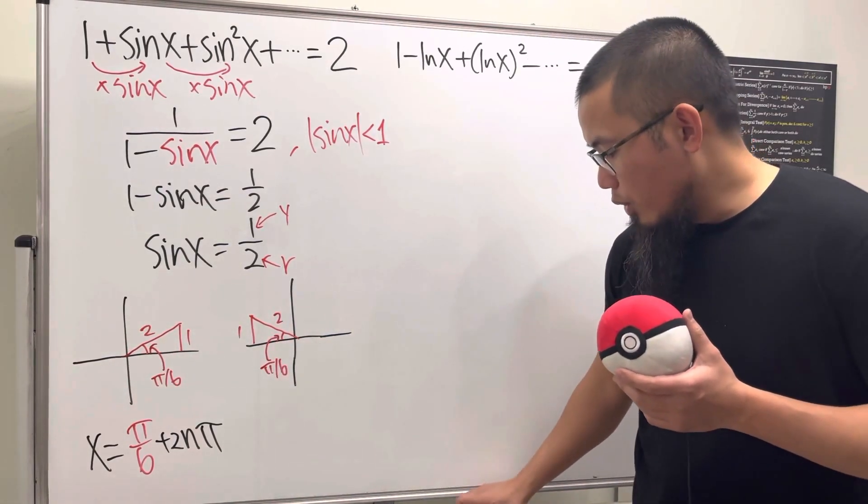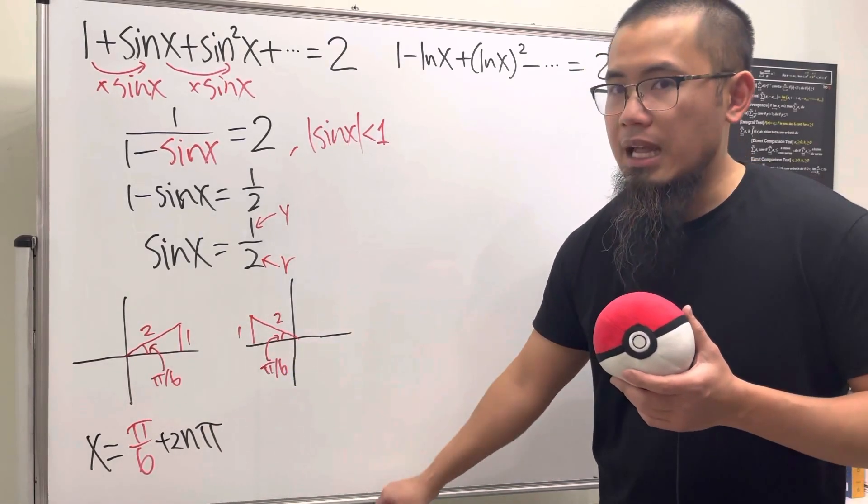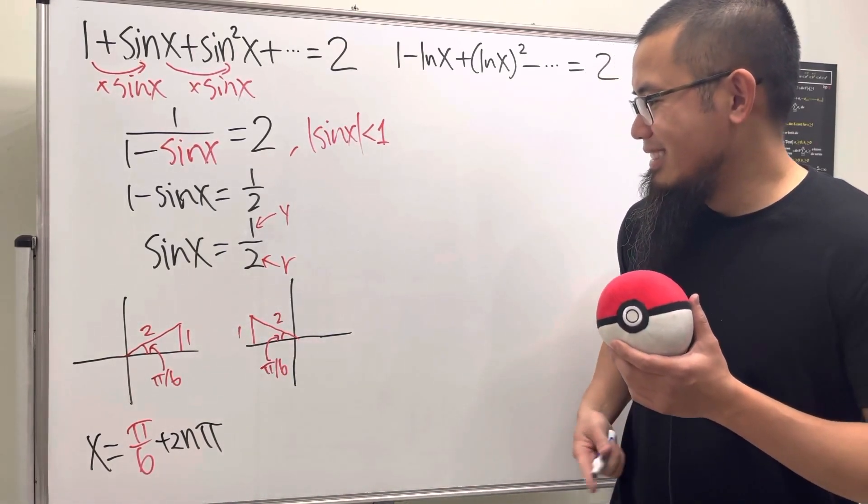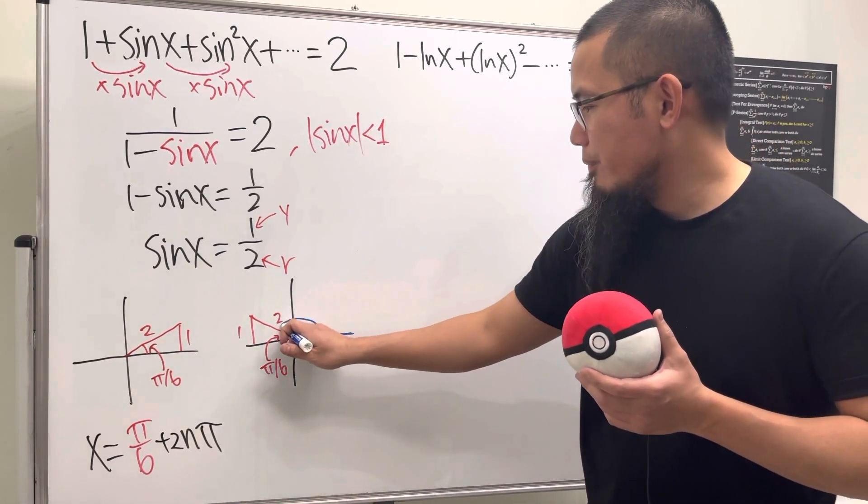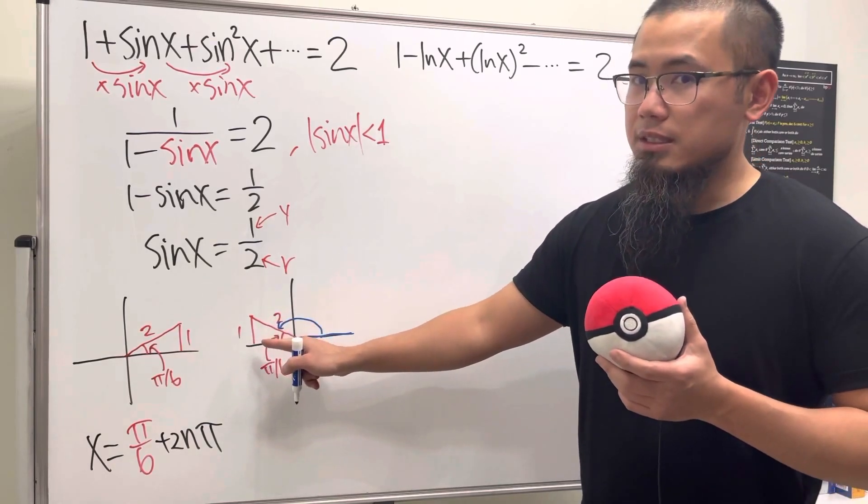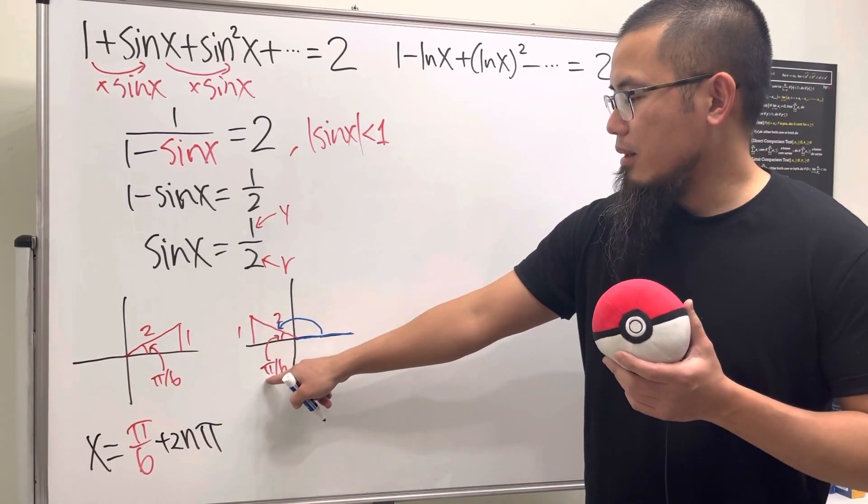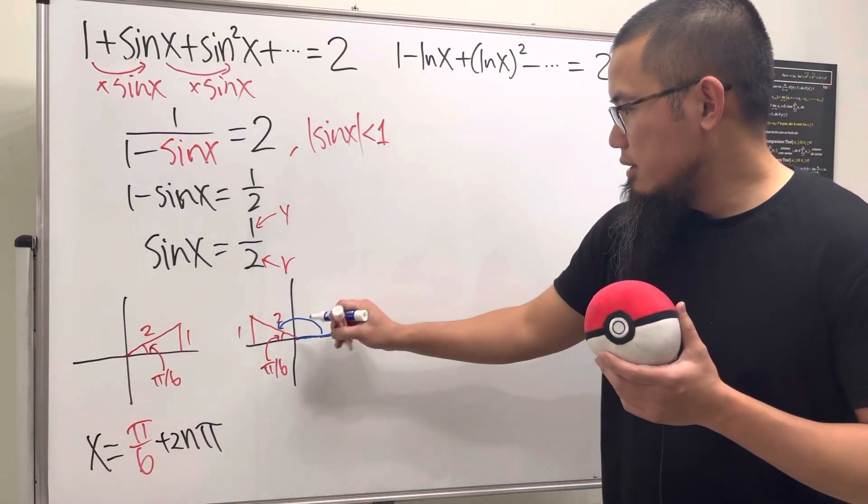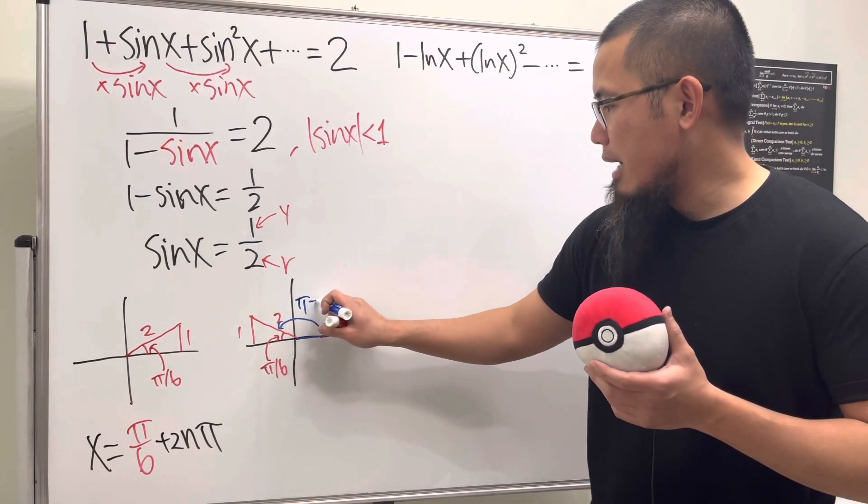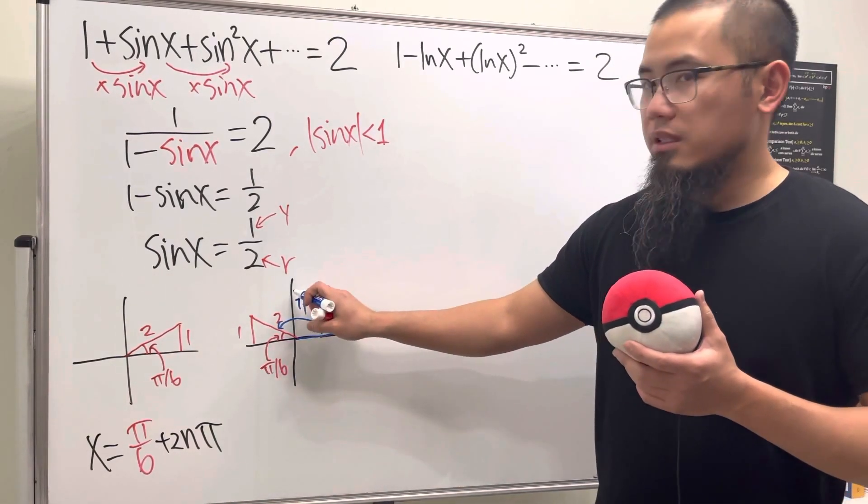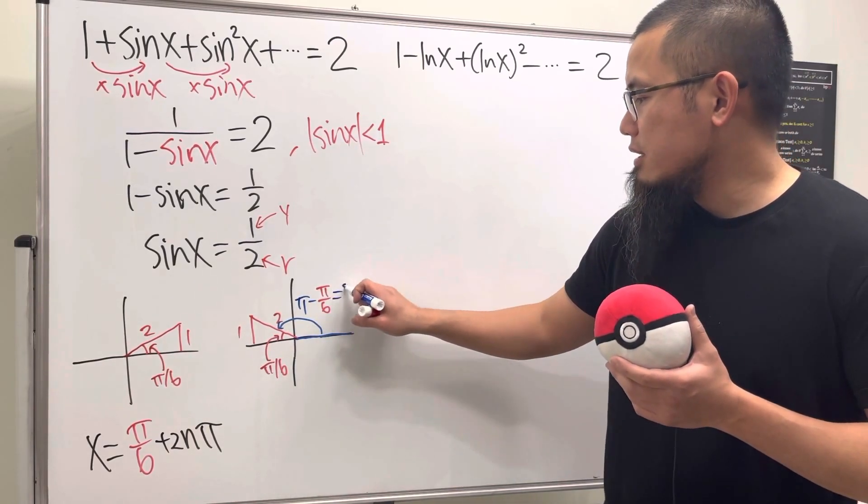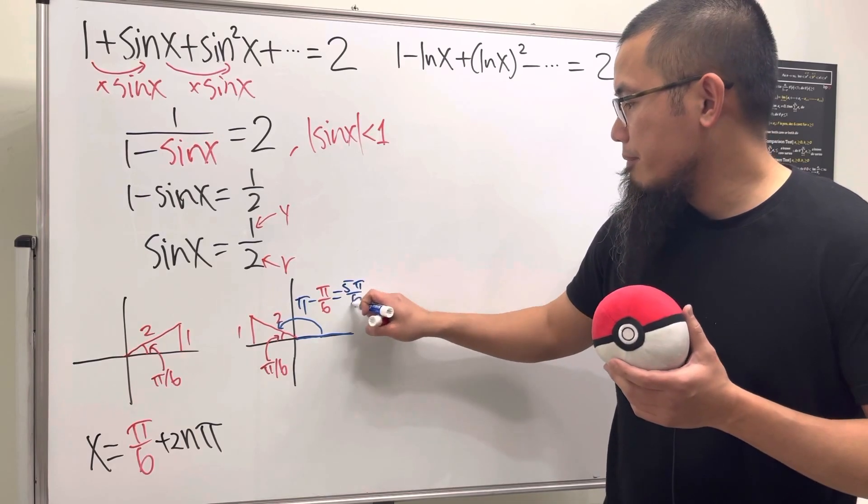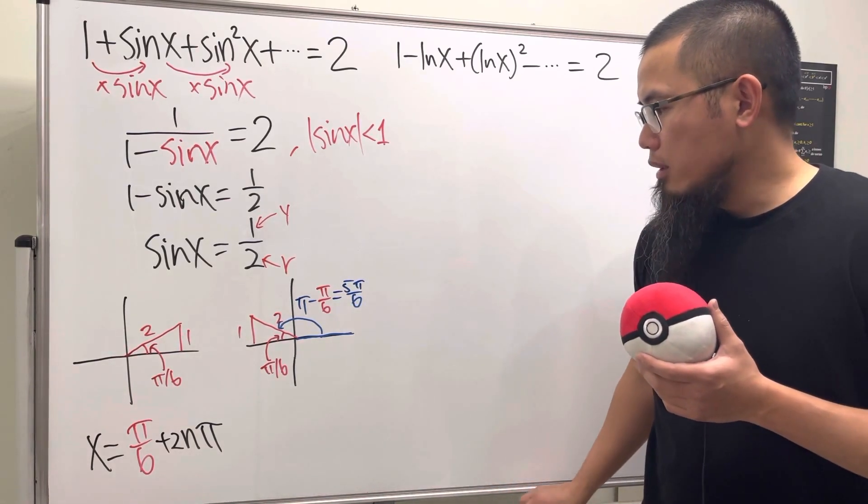However, when we want to measure angle, that's not how we do it. We have to go from the positive x-axis to here. Well, the whole thing is π, we will have π over six right here, so this is just going to be π minus π over six. This is six over six minus one over six, which is just going to be five over six.